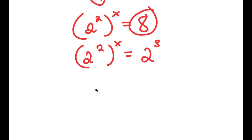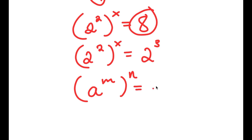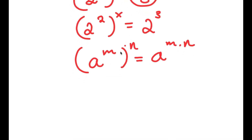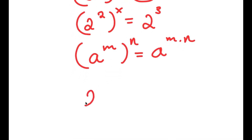If I have something in the form a to the power of m to the power of n, this is equal to a to the power of m times n. So 2 squared to the power of x becomes 2 to the power of 2 times x, which is simply 2 to the power of 2x. And now this is equal to 2 to the power of 3.